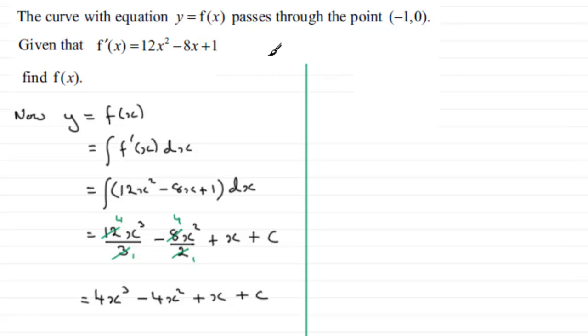So that means it must lie on the curve and therefore satisfies this equation. So we can say that when x is -1, y is 0.